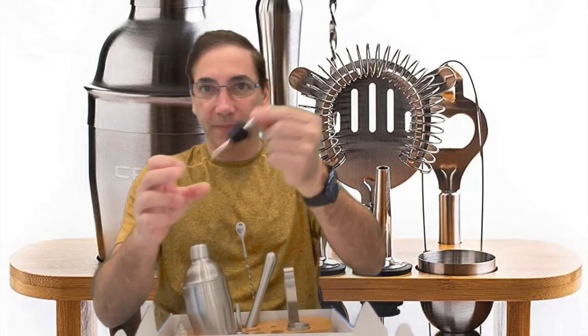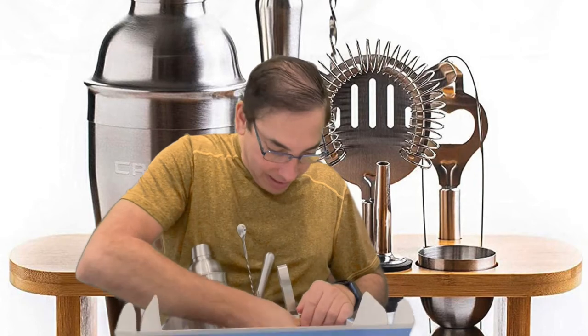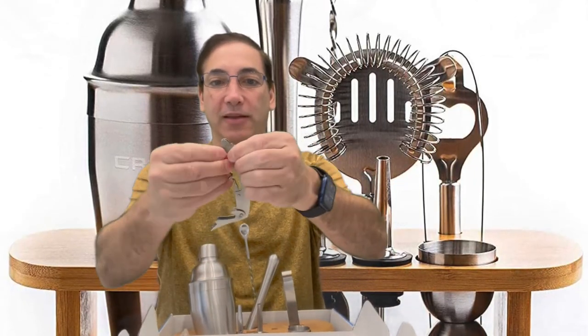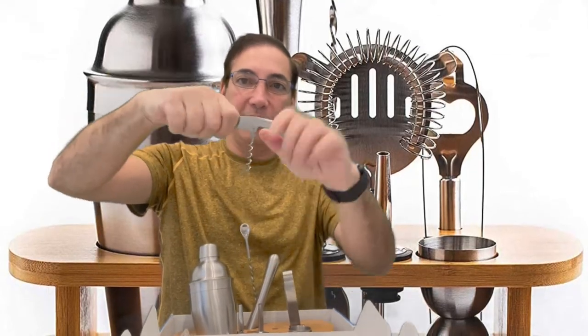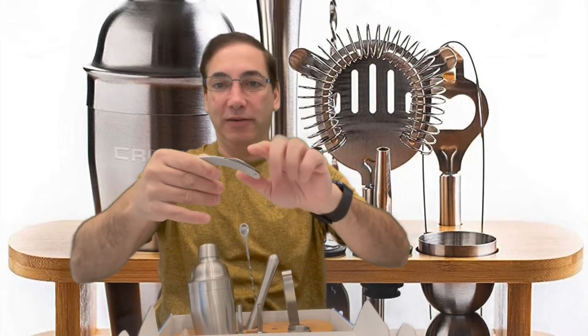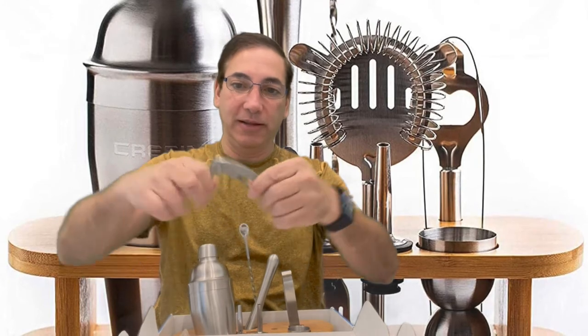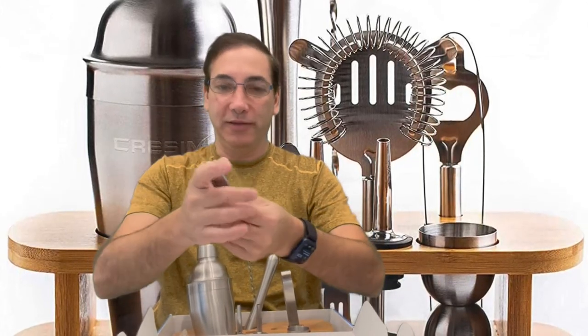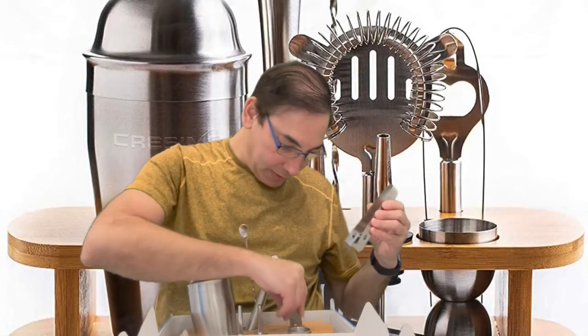We have a little corkscrew here so you can screw and pull it up. It comes with a little knife too to cut the foil. It's got an opener here for like beer bottles. Let's see which thing goes where.